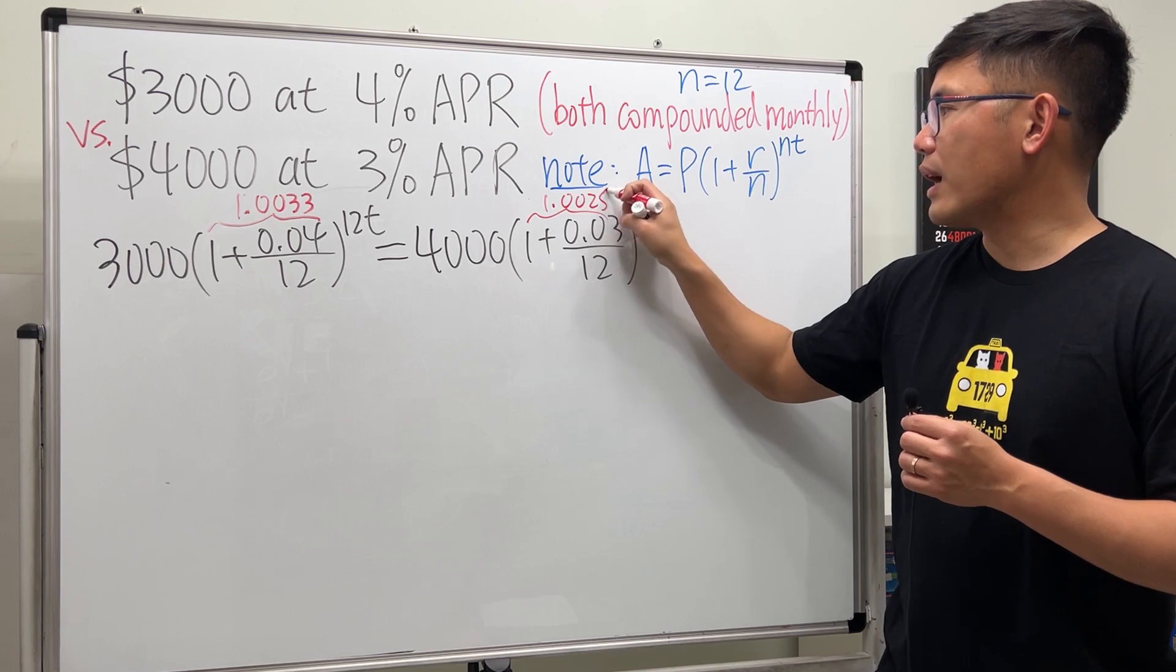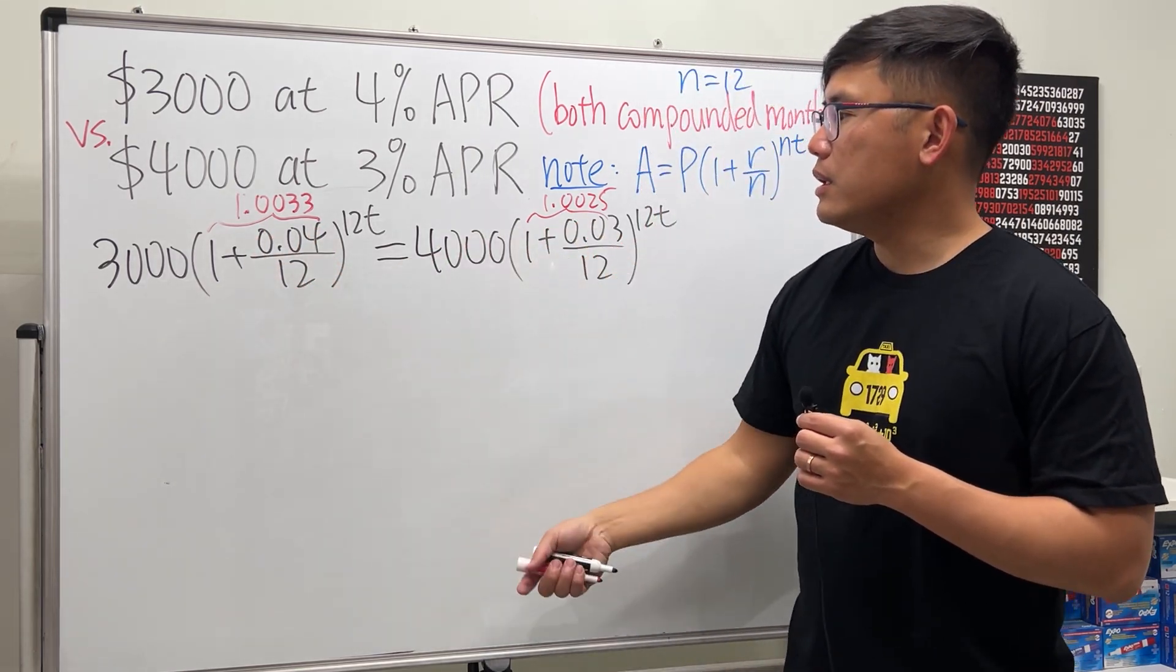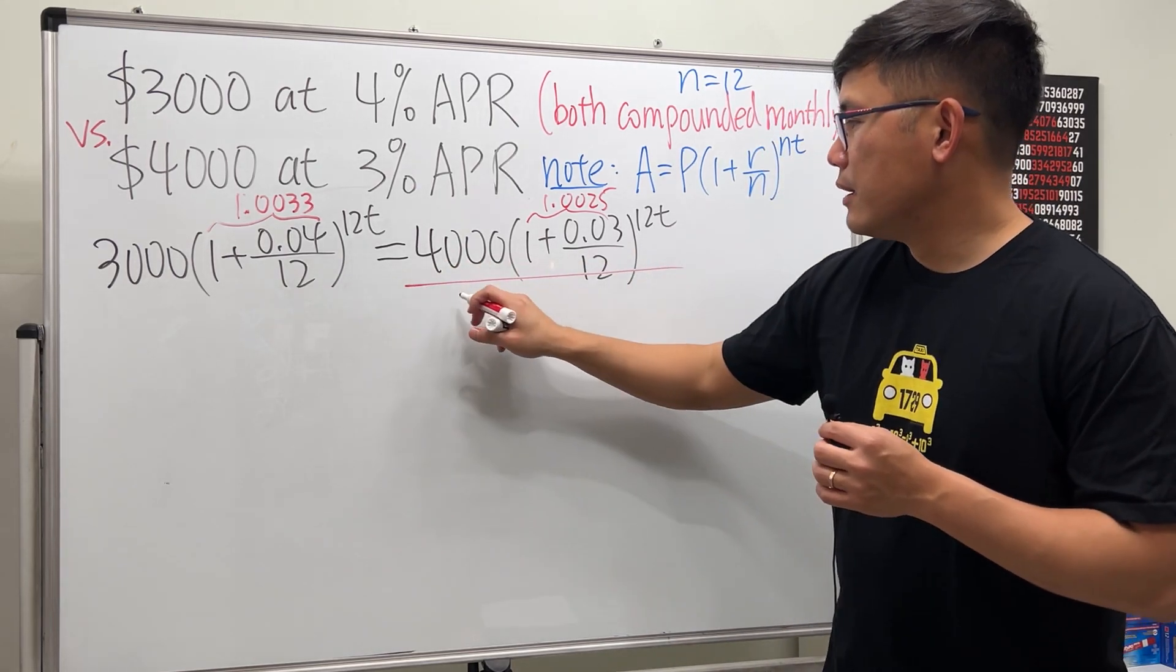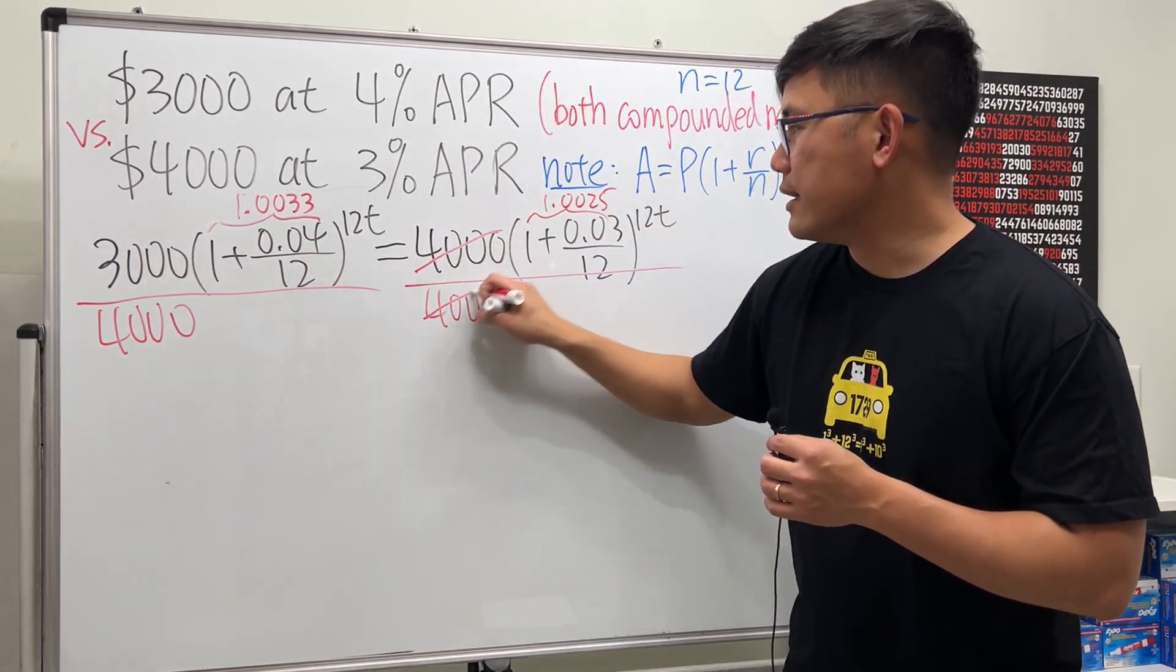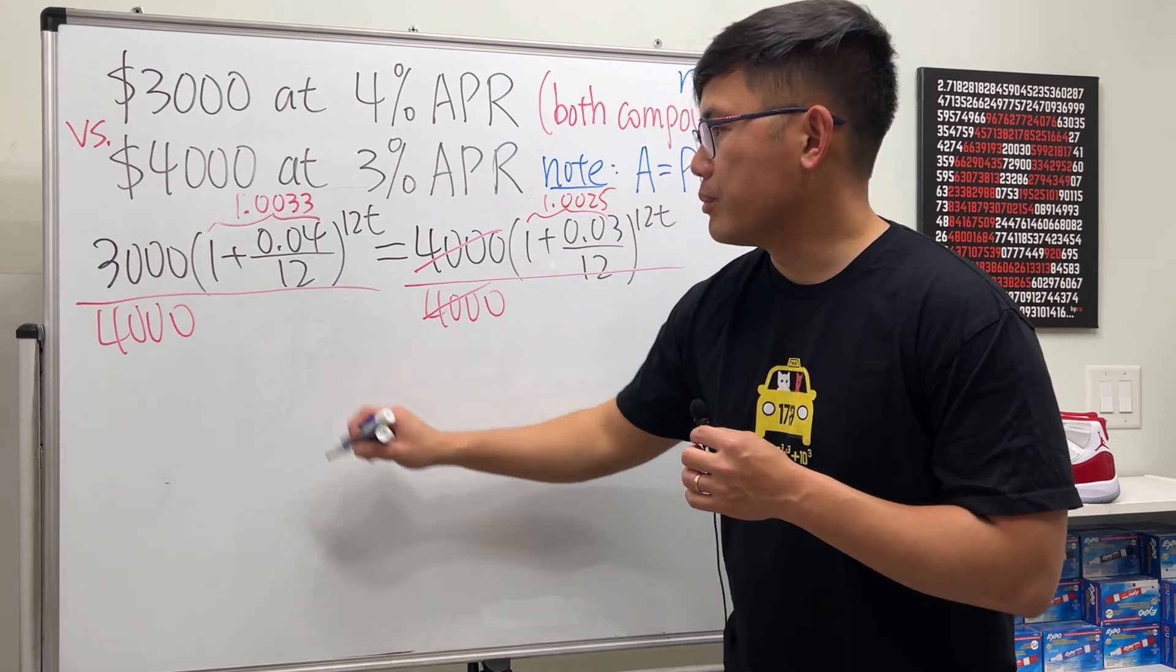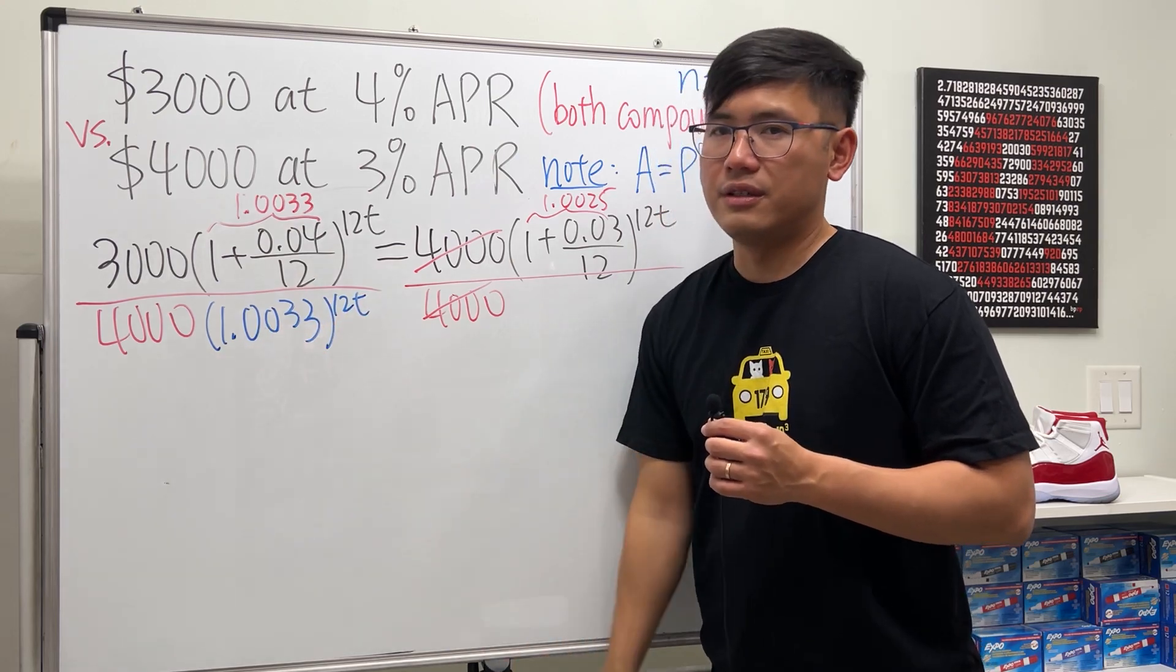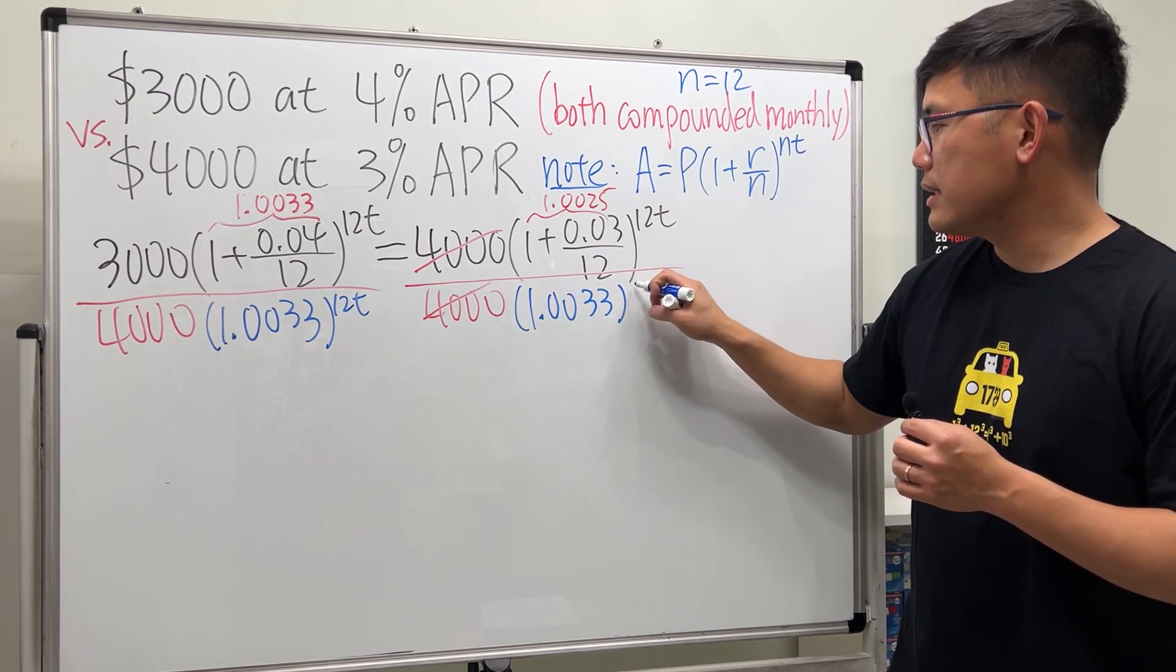Here we have the base inside already. Let me divide 4,000 on both sides because I know 3,000 divided by 4,000 is a much nicer decimal number. I will divide 4,000 on both sides, and this and that will cancel. But in the meantime, I will also have to bring this to the other side by dividing. I will divide by 1.0033 raised to the 12t power - don't forget about that because this whole thing is together. Do the same thing here: 1.0033 raised to the 12t power. Then this and that will cancel.